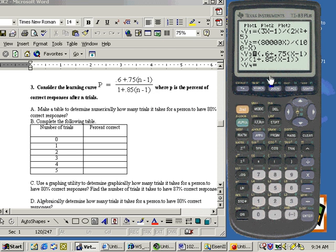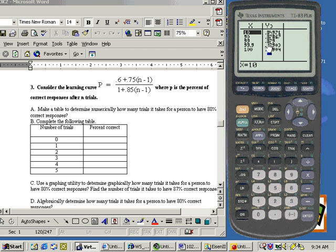One is to make a table of values and put in large values for N. I have this in the Y equals, so I can go to my table menu, which I have set for ask, and I can put values in. For example, at 10, you're up to 84.9% correct, or 0.849. At 100, you're up to 87%, almost 88%.